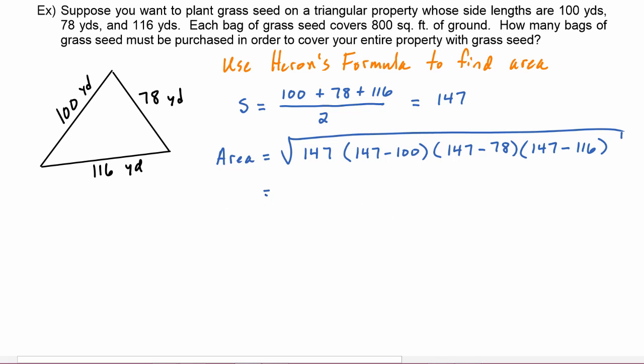147 becomes the square root of 147 times, 147 minus 100 is 47, 147 minus 78 is 69, and finally 147 minus 116 is 31.